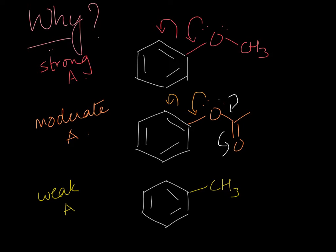And finally you have the weak activator out here. Now that can donate electron density into the ring via hyperconjugation but the amount of that is a lot lower than the ones by resonance up here.